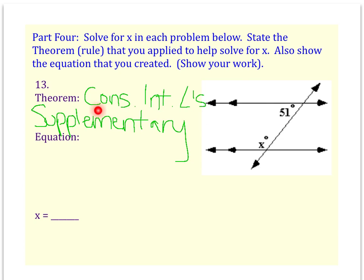Even if you forget that they're consecutive interior, you should be able to look at the picture and say they're not equal, so they're supplementary. Our equation will be x plus 51 equals 180. To solve for x, I subtract 51 from both sides and get x to be 129.